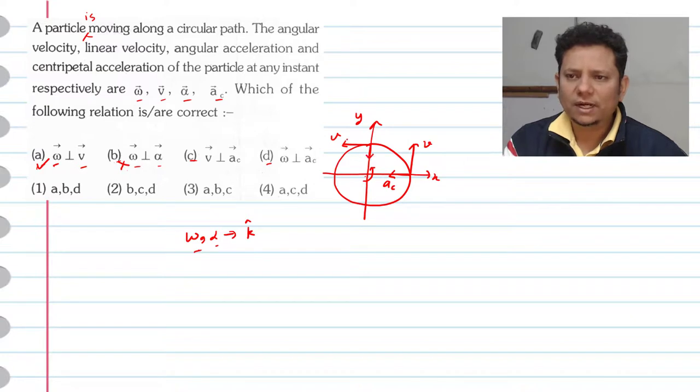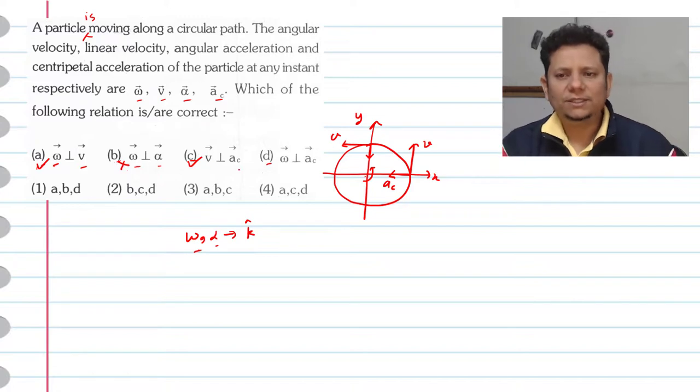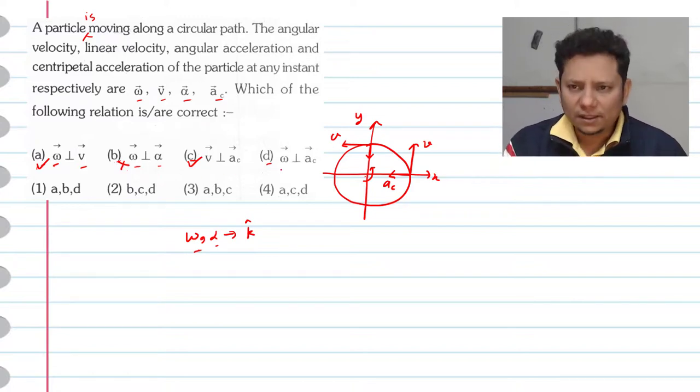So when you reach any point on the circular path, ac points to the center. So v is always perpendicular to ac. Option 4: Omega is perpendicular to ac.